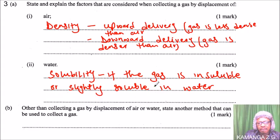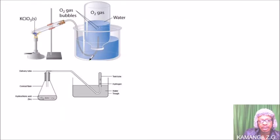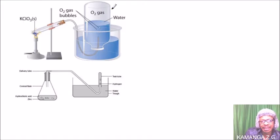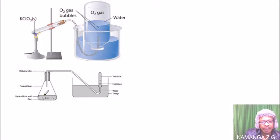Here is a diagram showing how we collect gas using water. This setup uses potassium chlorate, which consists of potassium, chlorine, and oxygen as a solid. When heated, it reacts and produces oxygen gas. Since oxygen is not soluble in water, we can collect it in the gas jar. Another setup shows hydrochloric acid reacting with zinc to produce zinc chloride and hydrogen gas — hydrogen is also collected over water.